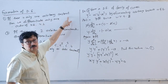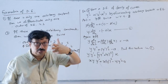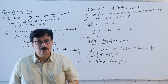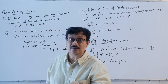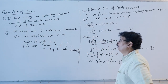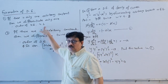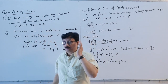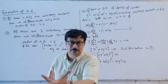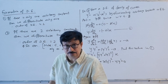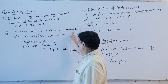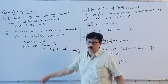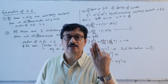If there is only one arbitrary constant in the solution and we have to form a differential equation from that solution, then we differentiate only once to eliminate that arbitrary constant. The resulting equation is the differential equation of order one — order one because there was only one arbitrary constant. If there are two arbitrary constants, say a and b, we differentiate twice to eliminate them, giving order two.